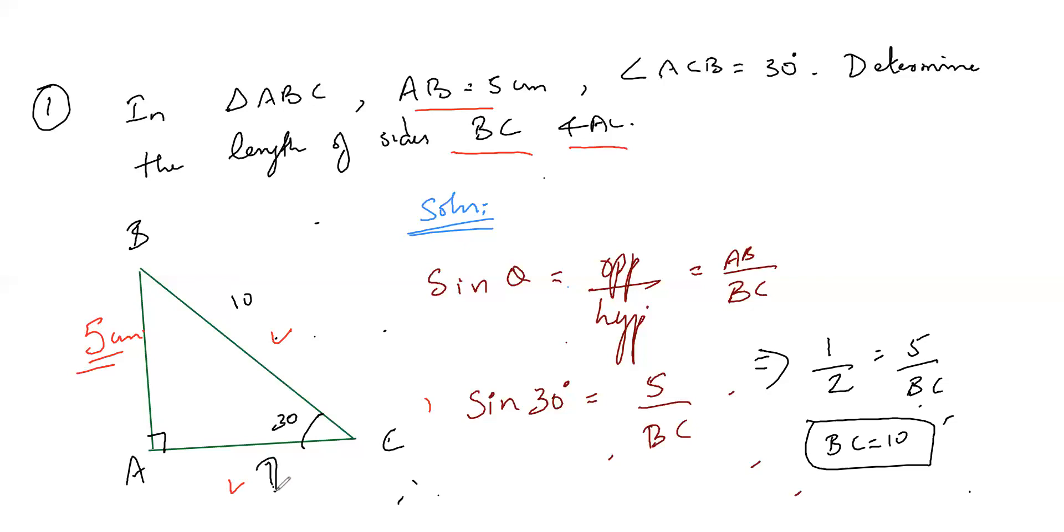We can use again tan 30 formula. Tan 30, opposite side by adjacent side. So opposite side is AB by AC. What is my tan 30 formula, 1 by root 3 is equal to 5, AC I don't know. So what is my AC, 5 root 3 respectively.